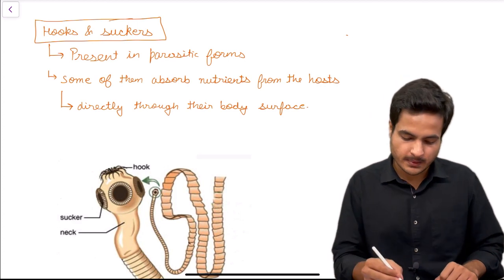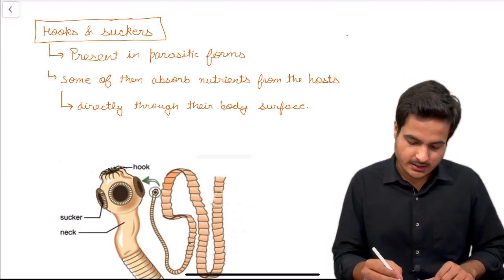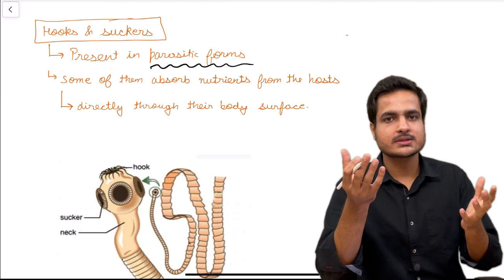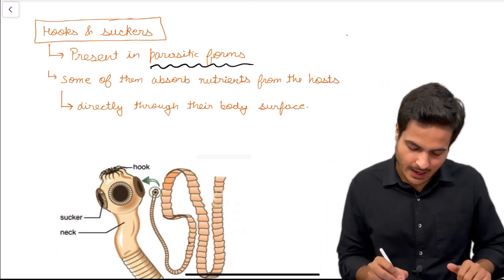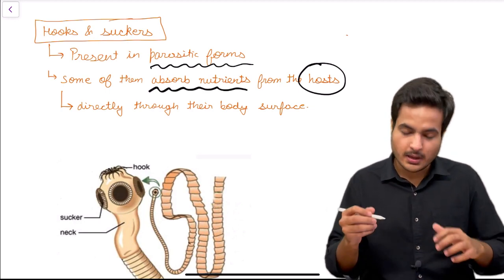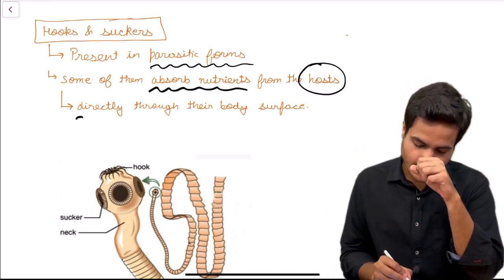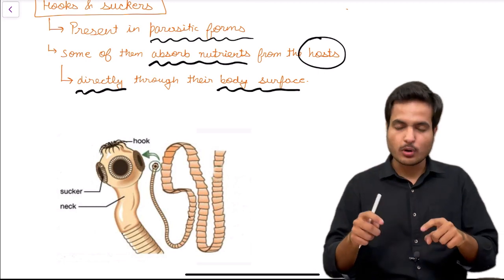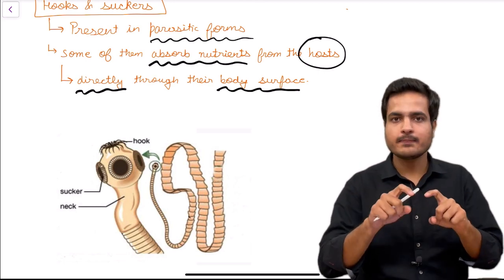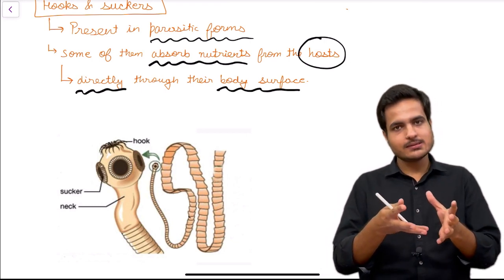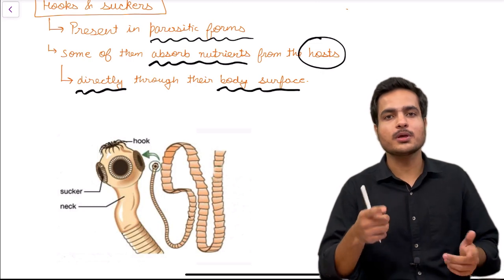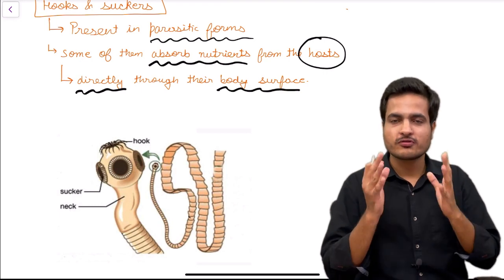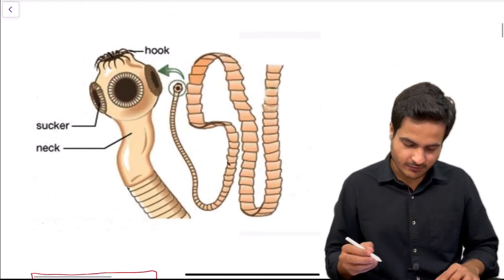Flat worms have hooks and suckers on their body, present only in parasitic forms that live as endoparasites on animals including humans. The hook helps the flat worm stick to the intestinal wall of the host, and the sucker helps in absorbing nutrition from the host body. Some flat worms can also directly absorb nutrients through their body surface.